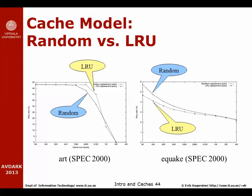Here is a study that compares how an LRU algorithm compares with a random algorithm. You have the miss ratio on this axis — lower is better — and the cache size on the other axis. For the benchmark equake, random replacement always performs worse than LRU. But for the application 'art' — a neural network simulator from the SPEC 2000 benchmark suite — LRU performs worse when you go between 128 kilobyte caches up to about 512 kilobyte caches.